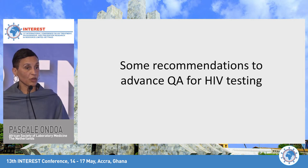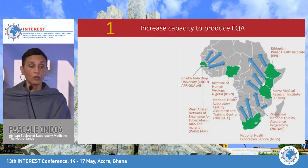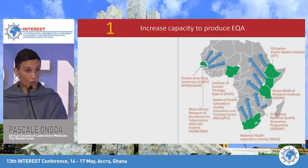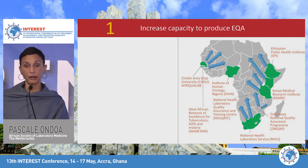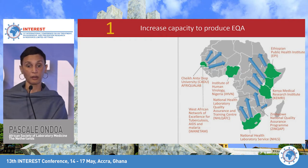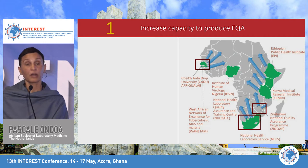These are some recommendations to advance quality assurance for HIV testing, from the vision of ASLM and from discussions ongoing on the continent. First, we think we can increase the capacity to produce EQA. This map of Africa shows in green the centers of excellence in Africa that collaborate with ASLM where EQA production is feasible.